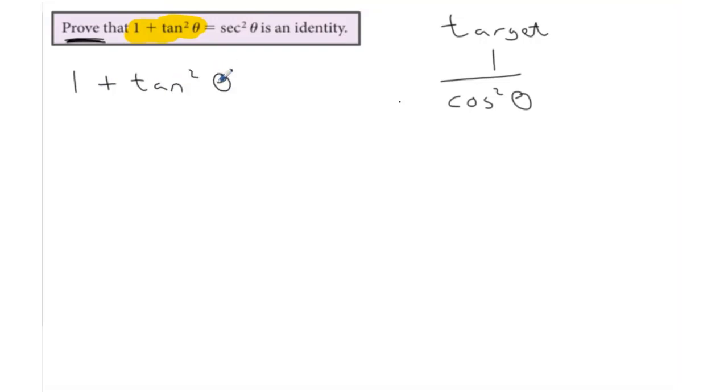So if you look at what we're aiming at, we need cos theta. The only way you're going to get cos theta is by using the identity for tan. So we know that tan theta is sine theta over cos theta.